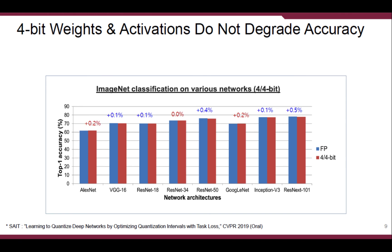We tested various network architectures on ImageNet classification tasks — RxNet, VGG, ResNet — and all the networks did not reveal any accuracy drop.